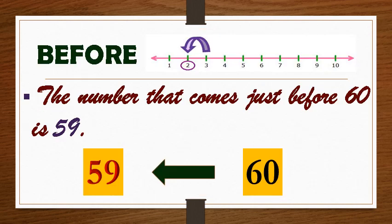What comes before? Children, all of you observe this line marked with numbers from 1 to 10. The encircled number 2 comes just before 3. Let us take another example. The number that comes just before 60 is 59.